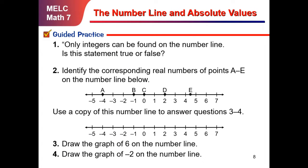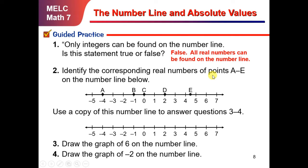Let's consider some guided practice. Number 1: Only integers can be found on the number line — is this statement true or false? The correct answer is false, because all real numbers can be found on the number line. Number 2: Identify the corresponding real numbers of points A to E on the number line. Point A is at coordinate negative 4, point B is at negative 1, C is at 0, D is at positive 2, and E is between 4 and 5, so that means it is 4.5. We are all correct.